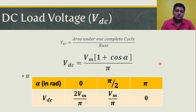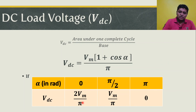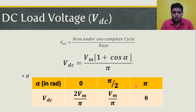Let's calculate VDC for different firing angles. At alpha = 0°: cos(0) = 1, so VDC = 2Vm/π — same as an uncontrolled full wave rectifier with diodes. At alpha = 90°: cos(90°) = 0, so VDC = Vm/π — exactly half the maximum. At alpha = 180°: cos(180°) = −1, so VDC = 0. As the firing angle increases, VDC decreases. By using the controlled converter, we can adjust VDC by changing the firing angle.